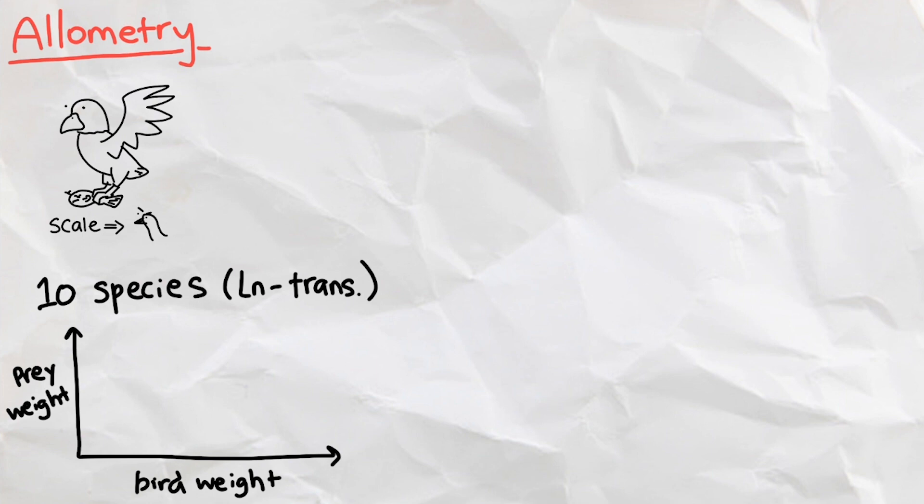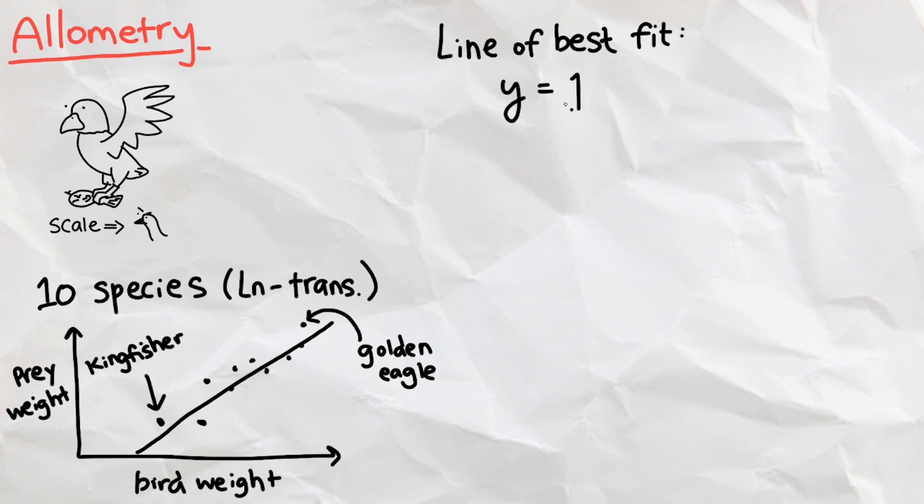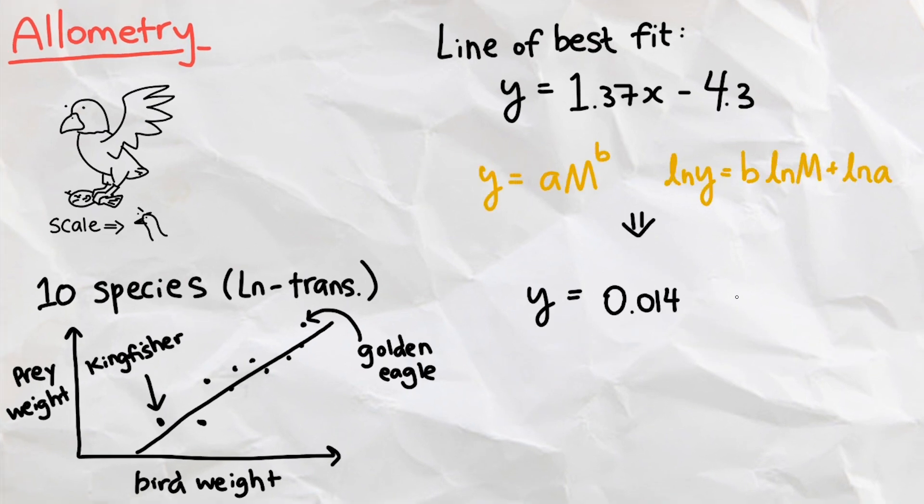Then, we log transformed the graph and got something like this. The golden eagle is right here, while the kingfisher is down here. We found the equation for the line of best fit in this graph, and derived the allometry equation like so, where the m here stands for the mass of the bird.